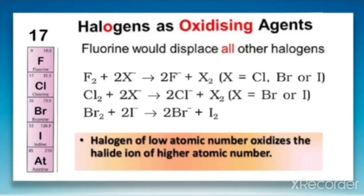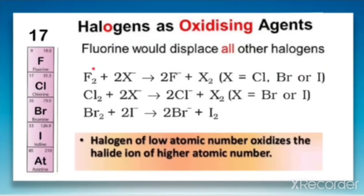So we can say that a halogen of low atomic number oxidizes the halide ion of higher atomic number. This is clear from the equation: fluorine has a low atomic number and it oxidizes halides of higher atomic number — X⁻ can be chloride, bromide, or iodide. Therefore iodine shows the weakest oxidizing power and fluorine shows the highest.